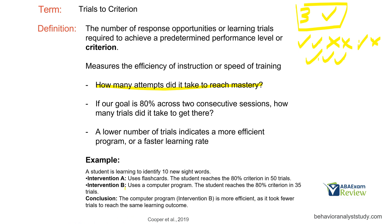Another example: a student is learning to identify 10 new sight words. Intervention A uses flashcards and reaches criterion in 50 trials. Intervention B uses a computer program and reaches criterion in 35 trials. Intervention B is more efficient. So now we can compare interventions. But when we factor in cost-benefit, we have to ask: is the computer program more expensive and time-consuming than the flashcards, even though it's more effective? As the BCBA, these are the decisions you need to make.